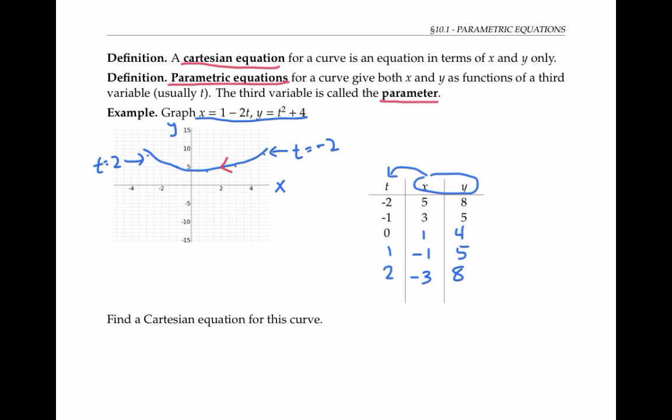To find a Cartesian equation for this curve, we need to eliminate the variable t from these equations. One way to do this is to solve for t in one equation, say the first equation. So 2t is equal to 1 minus x, which means that t is 1 half minus x over 2. Then we can plug that expression for t into the second equation and get y equals 1 half minus x over 2 squared plus 4. Which simplifies to the quadratic equation y equals 1 fourth x squared minus 1 half x plus 17 fourths.